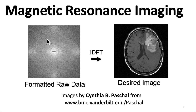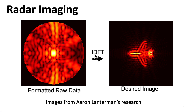Here we're showing the magnitudes of the data. These are complex numbers, so there are phases that aren't being shown, and those phases are quite important. So you can take the inverse discrete Fourier transform and get the appropriate image. This example shows simulated low-frequency radar data on the left, and if you format it in a certain way, you can take an inverse discrete Fourier transform and get an image of an object.